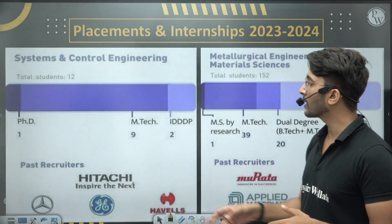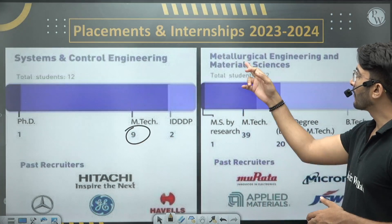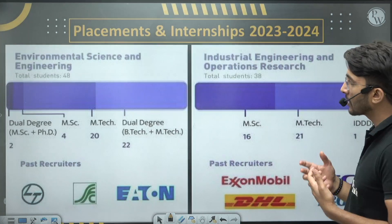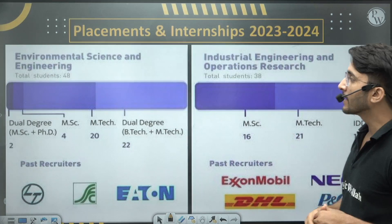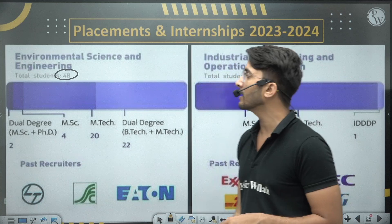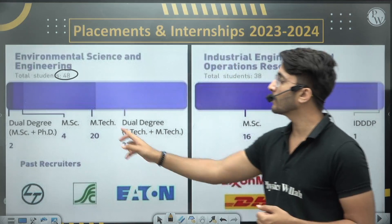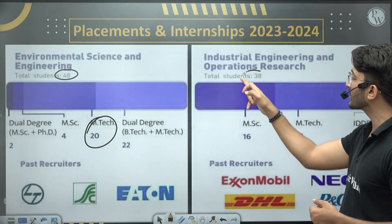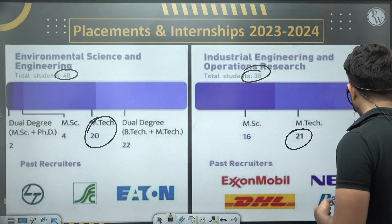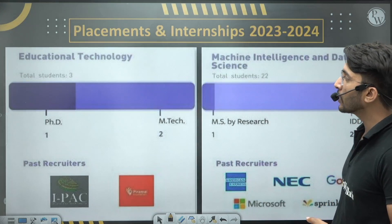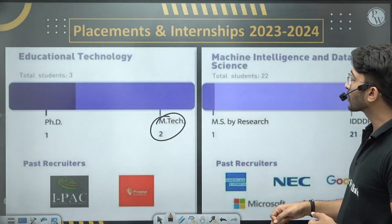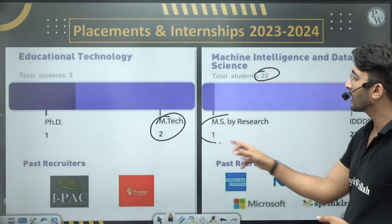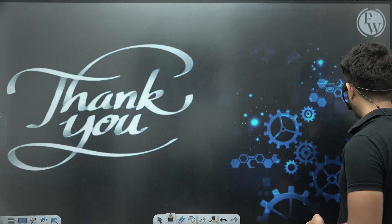For System Control and Engineering, 9 M.Tech students were selected out of 139 total placements. Environment Science and Engineering placed 48 students, with 20 from M.Tech. Industrial Engineering and Operations Research placed 30 students with 21 from M.Tech. Education Technology had 2 M.Tech placements, and Machine Learning had 22 total placements with 1 from MS by Research.